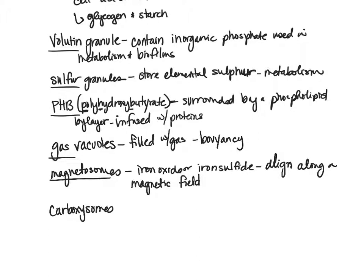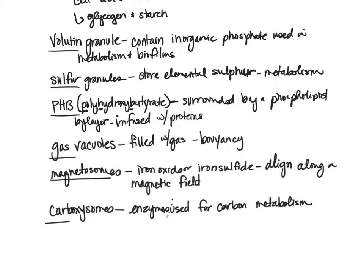The last inclusion type to be aware of is the carboxysome, which contains enzymes used for carbon metabolism. When carbon is available, all the necessary enzymes are contained inside a carboxysome; the bacterium can open it and those enzymes are immediately available for utilizing carbon in metabolism.